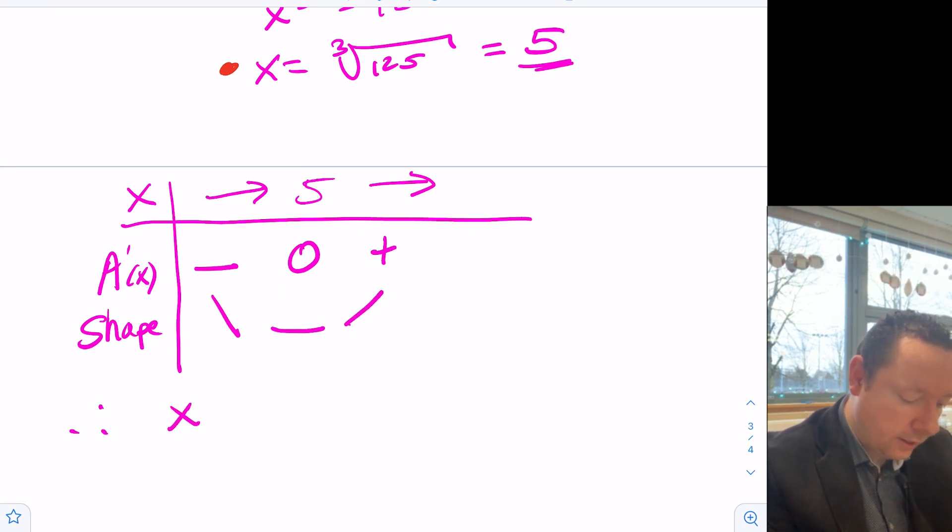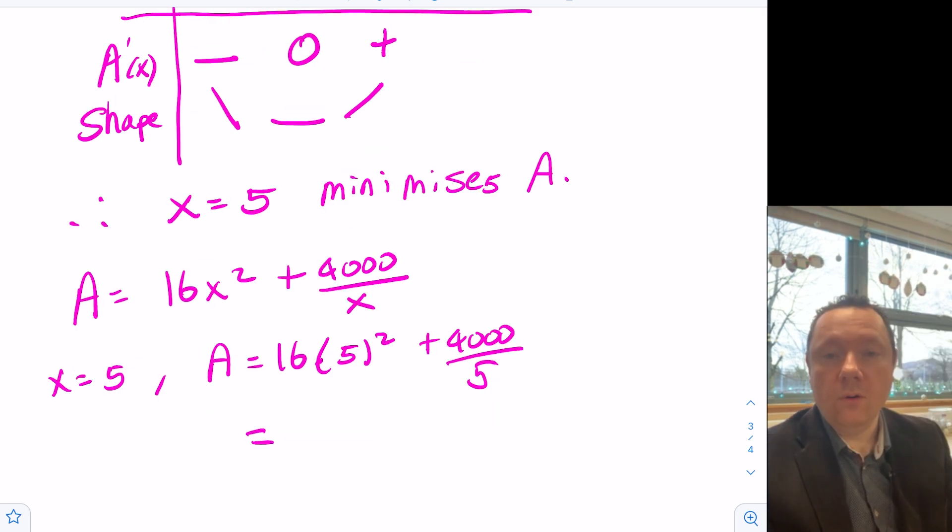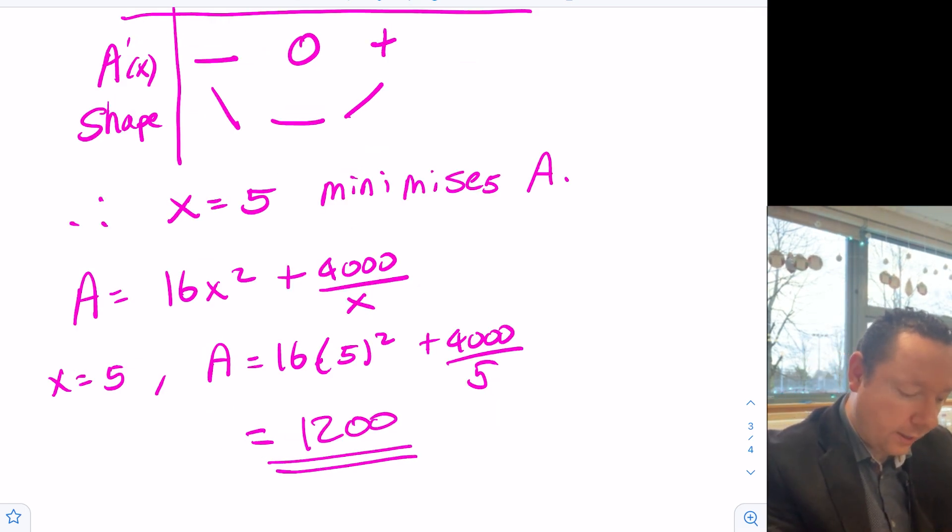So to get A, remember A at x equal to 5, we work out our area. Equals 16 times 5 squared plus 4,000 over 5. 1,200. For your final mark.